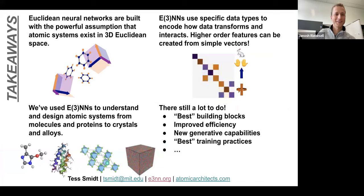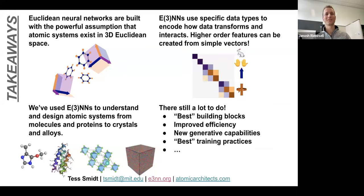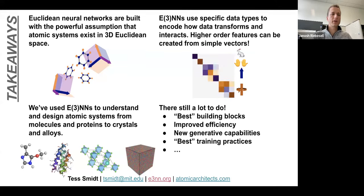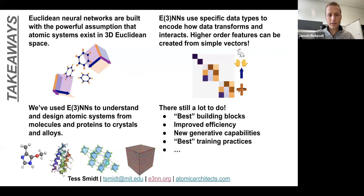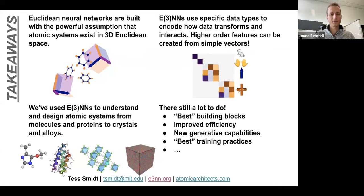Thank you very much, Tess, for this wonderful talk. You do a great job explaining these advanced topics in a very visual and approachable way. We have questions in the Q&A panel. One is from Mingjian Wen: there are instances — separate works by Michel Serioti and Zach Ulissi — showing that models without symmetries strictly baked in can have greater flexibility and learn better on some datasets. Any comments on strictly enforcing symmetries via equivariant models versus learning approximate symmetry via loss function or data augmentation?